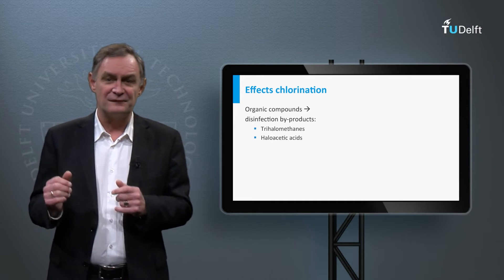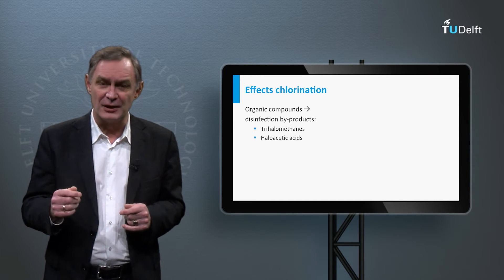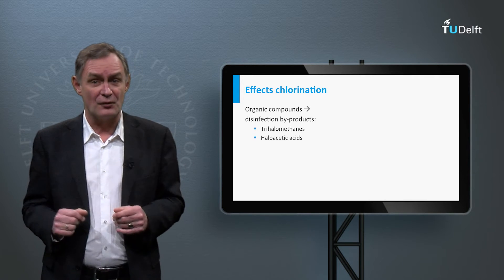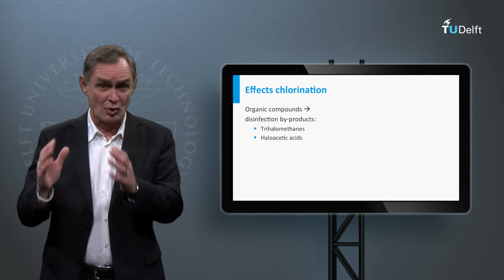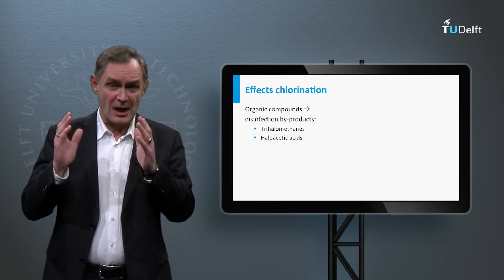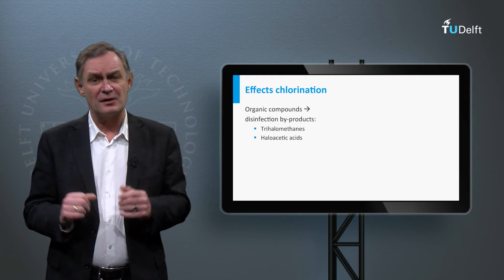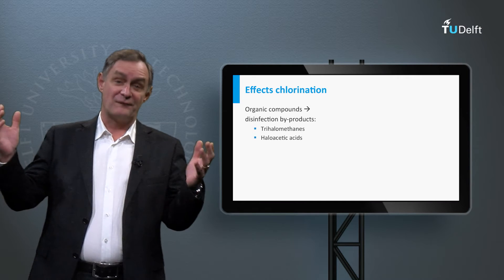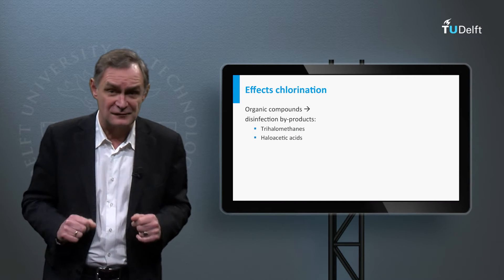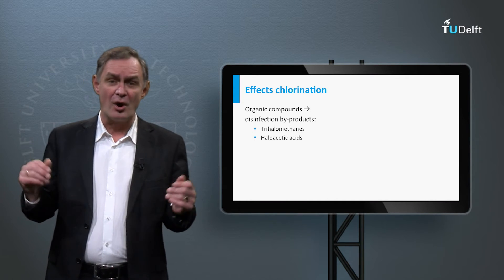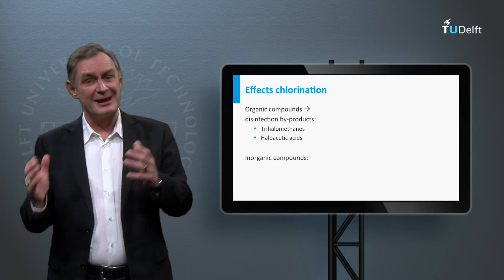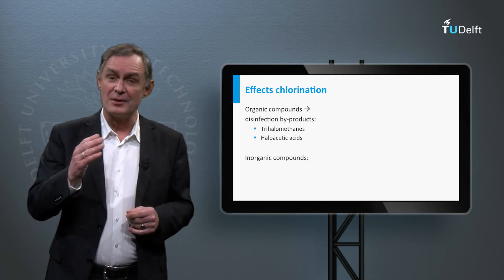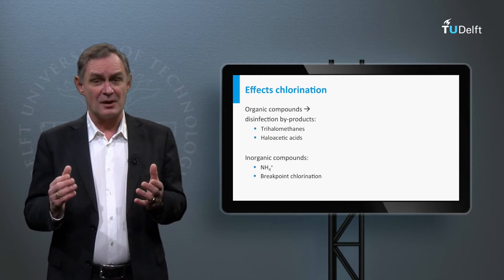The disinfection by-products can be avoided by removing the natural organic matter from the water, for example by coagulation, activated carbon filtration, or ion exchange, or by avoiding high dosages. Furthermore, chlorine can react with inorganic compounds. Ammonium can be removed by chlorination.